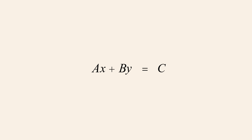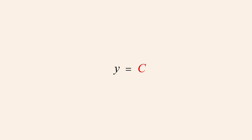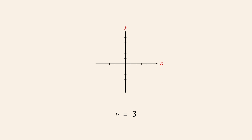So let's create a simple linear equation in x and y by setting a to zero and b to one. This eliminates x from the equation. If we set the constant c to three, we get the linear equation y equals three. Since the values of x are no longer constrained by the equation, x is free to take on any value. The graph of this equation therefore consists of every point whose y-coordinate is three and x-coordinate is any real number. The set of all these points is a horizontal line three units above the origin.